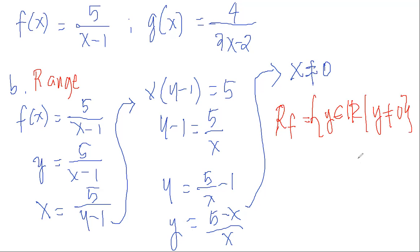This is the range for f(x). To verify: it is impossible for f(x) to equal 0, whatever the value of x, as long as x ≠ 1. So the range of f confirmed is {y ∈ ℝ | y ≠ 0}.